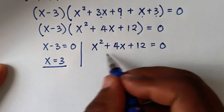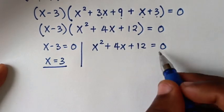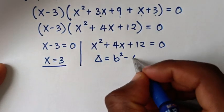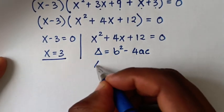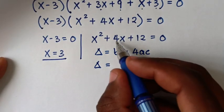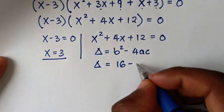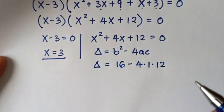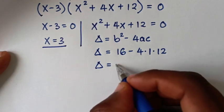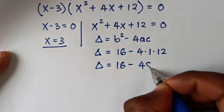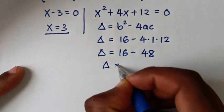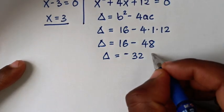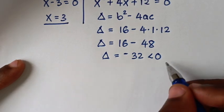And from this quadratic equation, we'll check if it will give a real solution or a complex solution by using the discriminant formula, which is discriminant is equal to b squared minus 4ac. So discriminant is equal to b squared — b is the coefficient of x which is 4, so 4 squared is 16 — minus 4 times a, which is the coefficient of x squared which is 1, times c, the constant which is 12. So discriminant is equal to 16 minus 4 times 12 which is 48, so discriminant is equal to minus 32, which is less than 0, so here we have a complex solution.